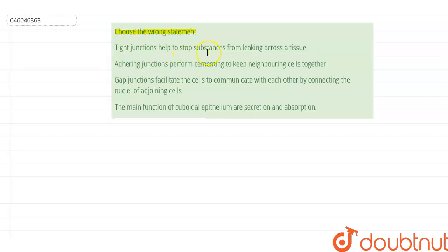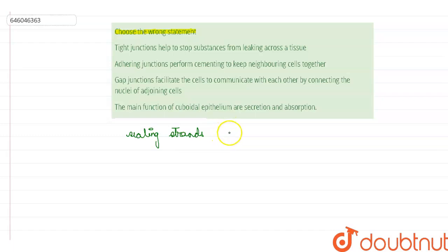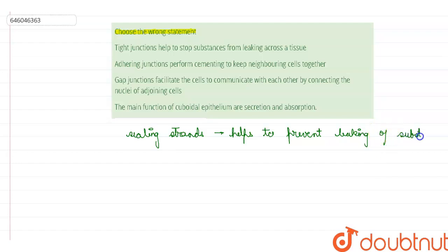The first statement says that tight junctions help to stop the substances from leaking across a tissue. Tight junctions are regions where the membranes of adjacent animal cells are held close together by sealing strands. They tie the cells firmly and check the movement of material between them. So the main function of tight junctions is to prevent leaking of substances across the tissue — this is a correct statement.